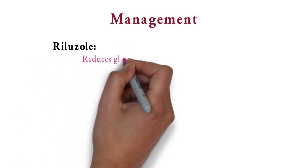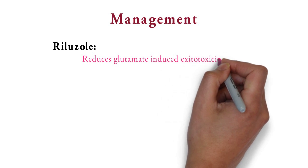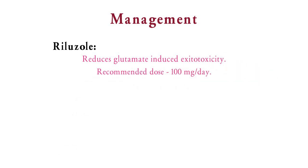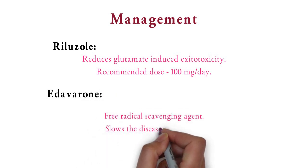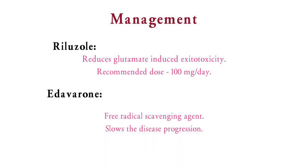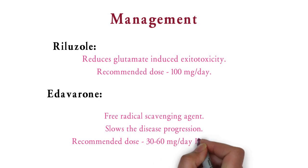Now for management, remember two drugs. The first drug is Riluzole — it reduces glutamate-induced excitotoxicity, and the recommended dose is 100 mg per day. The next drug is Edaravone — it is a free radical scavenging agent that slows down disease progression. The recommended dose is 30–60 mg per day given as IV infusion. So friends, this was all about MNDs with clinical types.